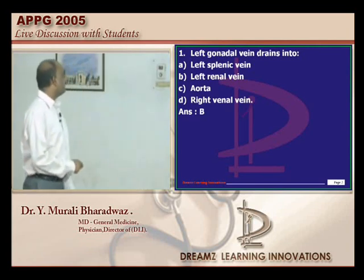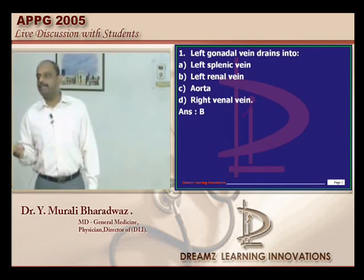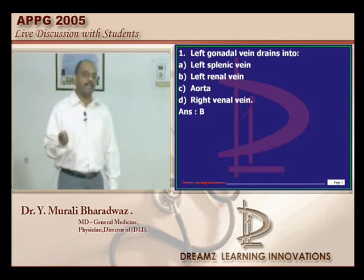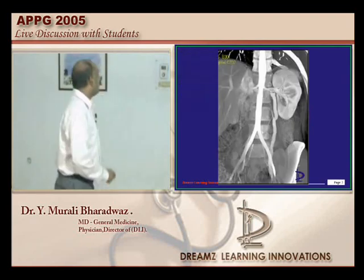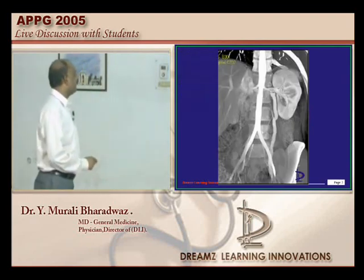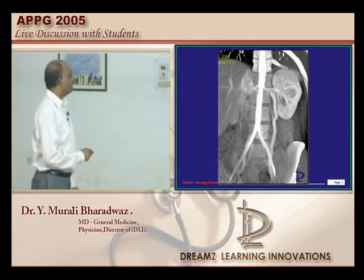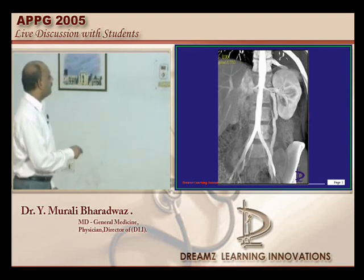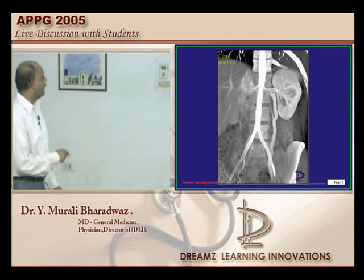Left gonadal vein drains into the left renal vein. Right gonadal vein drains into the inferior vena cava — that is what needs to be basically remembered. You can classically see the presence of the kidney with the renal vein and appreciate that the gonadal vein is passing towards the renal vein and draining into it.